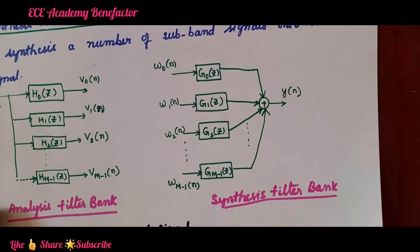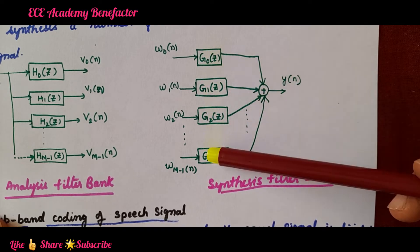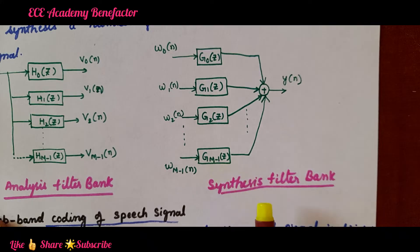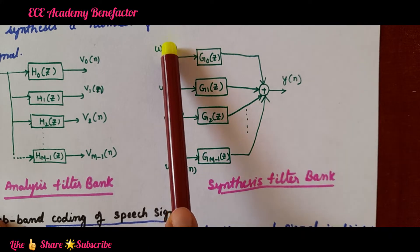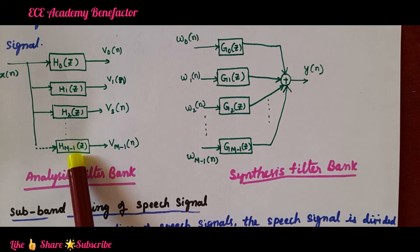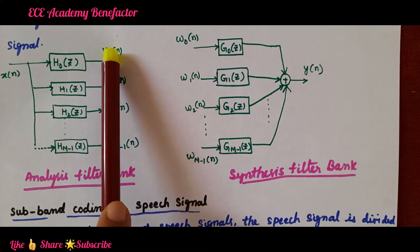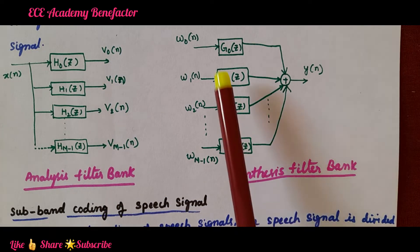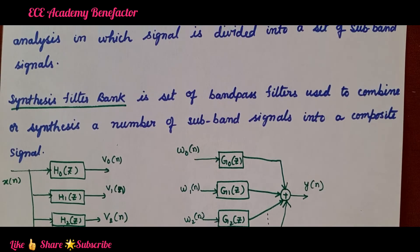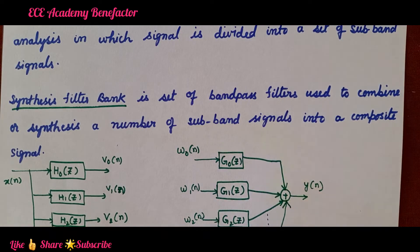The other type of digital filter bank is the synthesis filter bank. It is also a set of band pass filters with transfer functions G0(z), G1(z), G2(z), and G(M-1)(z). The synthesis filter bank is used to combine a number of sub band signals into a single composite signal.